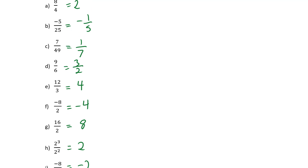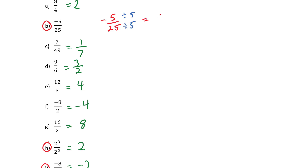I hope you gave them all a try. I've written down the answers here in green, and I'll take up a few problems that I think might be challenging. Let's take up B, H, and I. For B: minus 5 over 25 — the common factor between top and bottom is 5. We pull the 5 out: minus 5 divided by 5 is minus 1 over 5. Please notice the negative sign comes along for the ride — it has to be the same value.